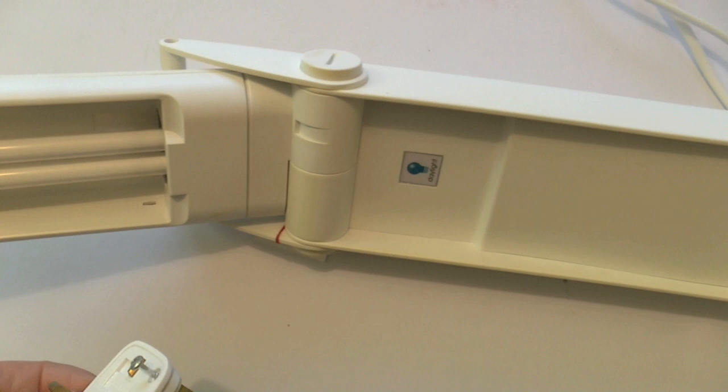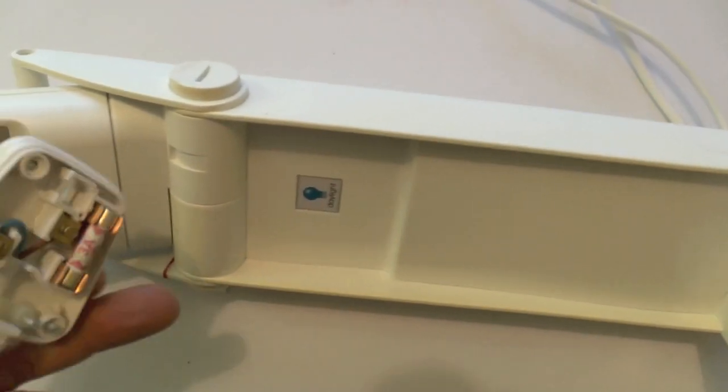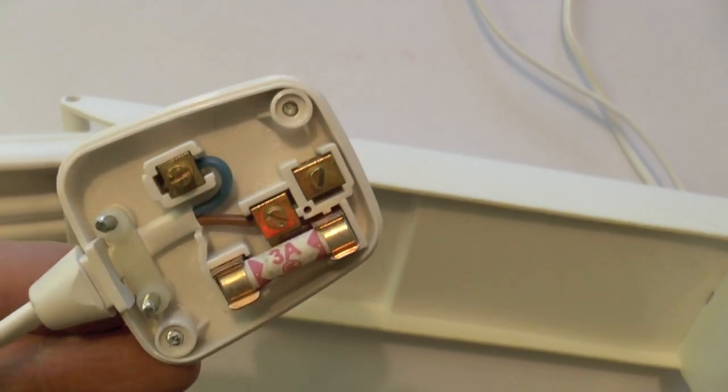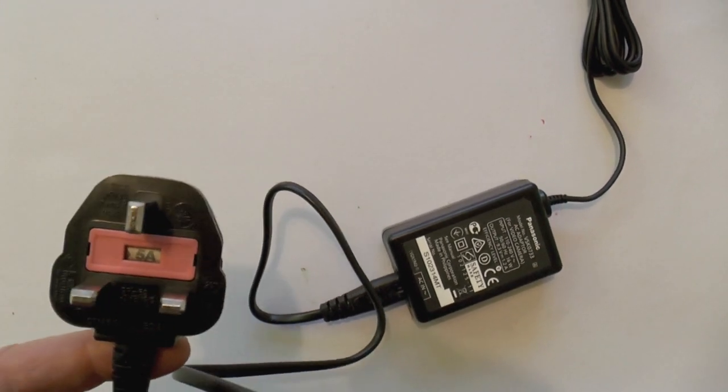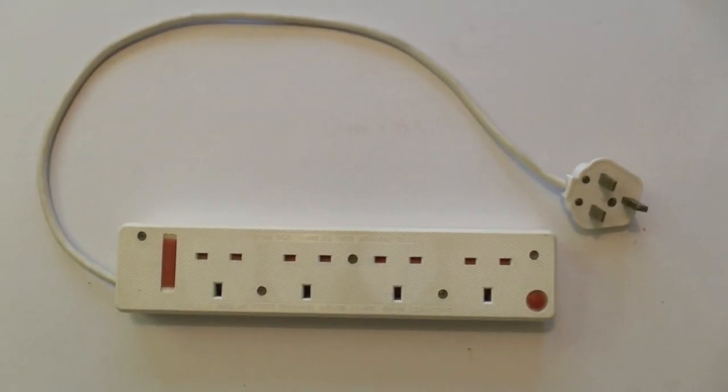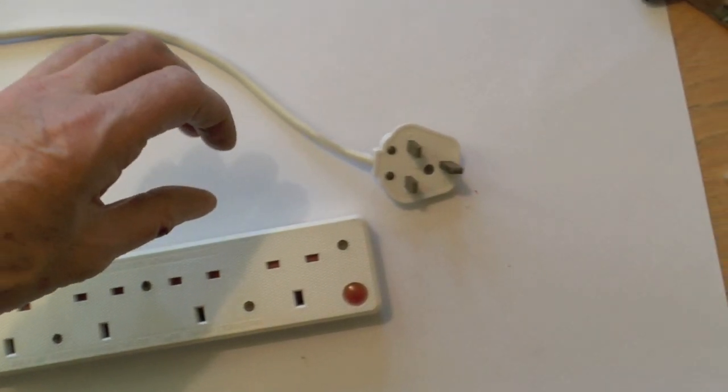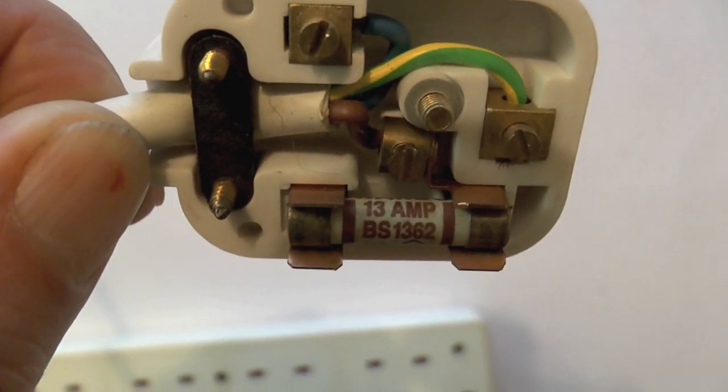Different electrical devices have fuses of different values. For example, this lamp has a 3 amp fuse fitted to the plug. The plug to the power supply has a 5 amp fuse, and this extension lead which may have many things plugged into it has a larger fuse - it has a 13 amp fuse.